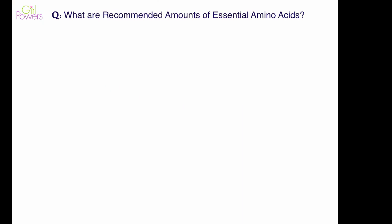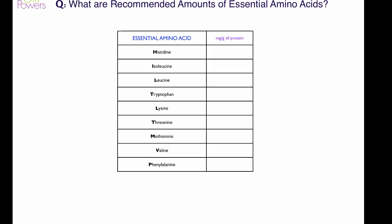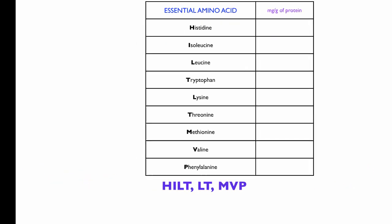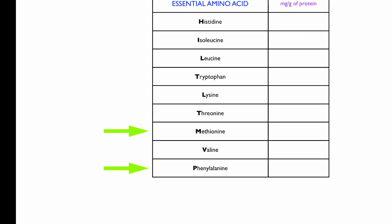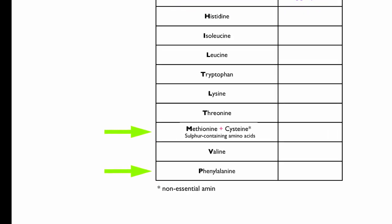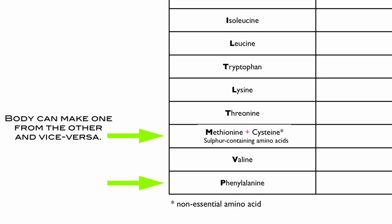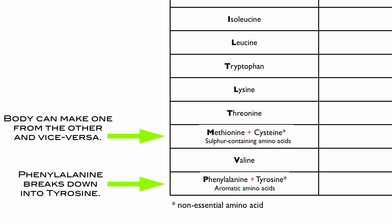What are recommended amounts of essential amino acids? Here we see the essential amino acids in terms of milligrams per gram of protein and what the recommended amount is. There's a handy acronym, HILT-LT-MVP, that can be helpful in remembering them. Two are measured a bit differently: methionine includes cysteine because they're both sulfur-containing amino acids and the body can make one from the other, so those two are measured together. Phenylalanine is measured with tyrosine because they are both considered aromatic amino acids, and phenylalanine breaks down into tyrosine.